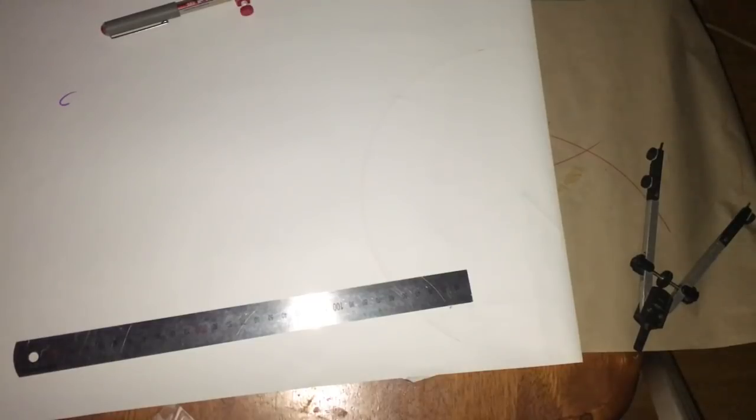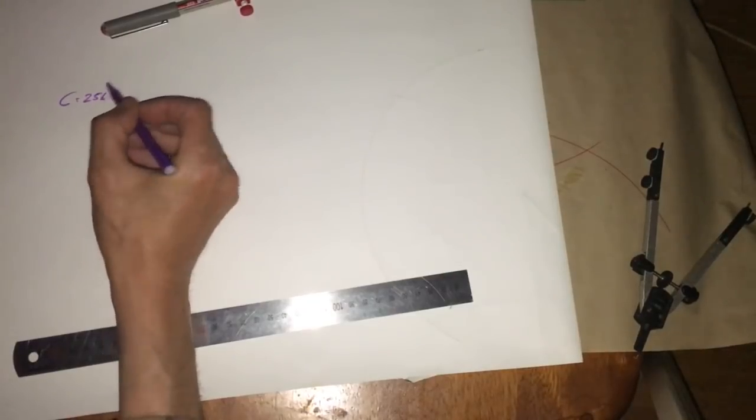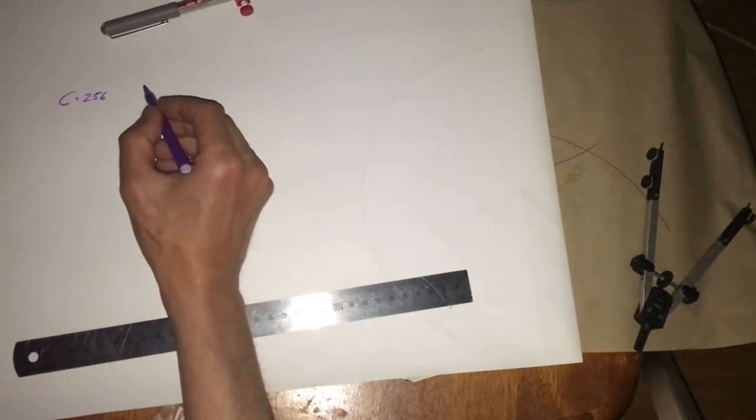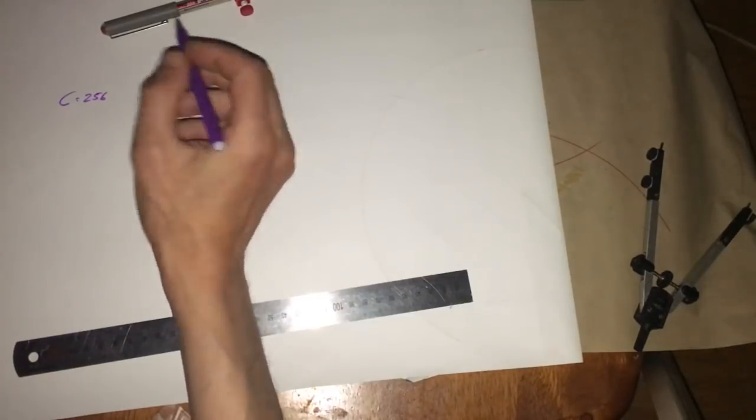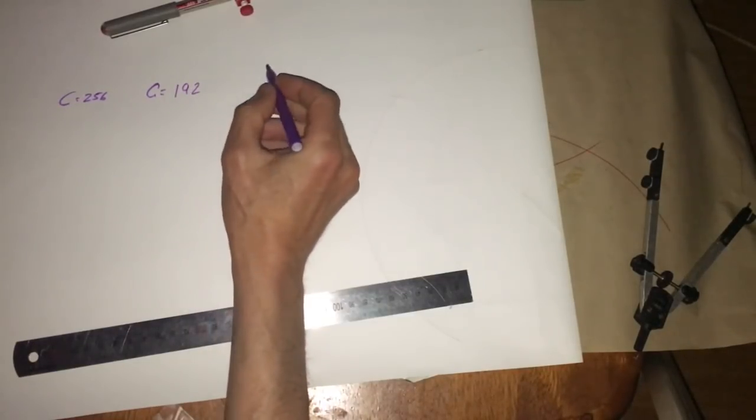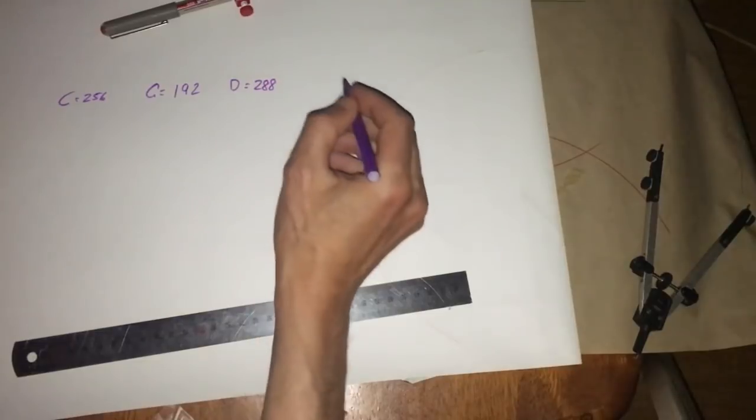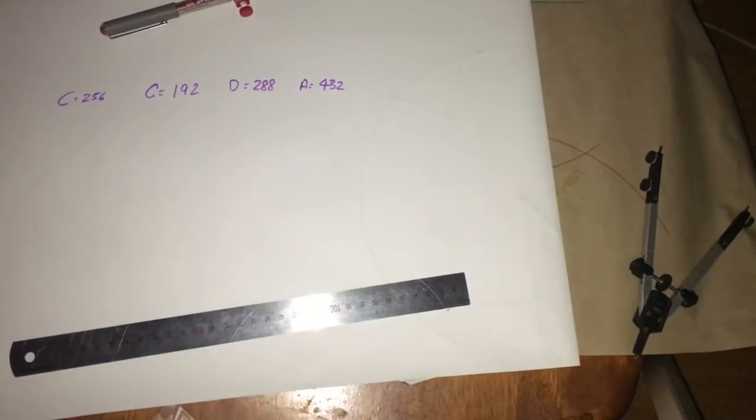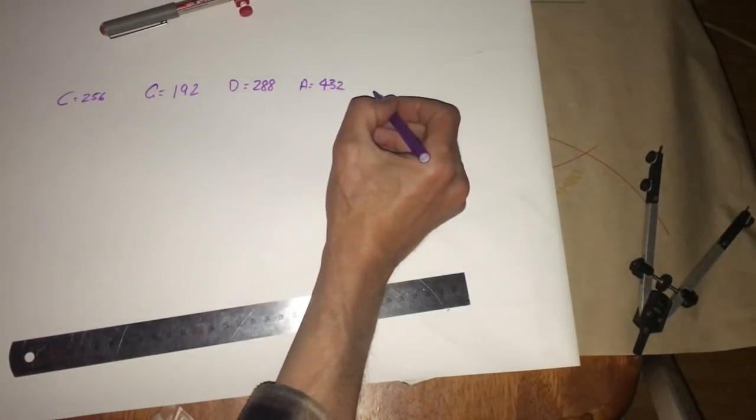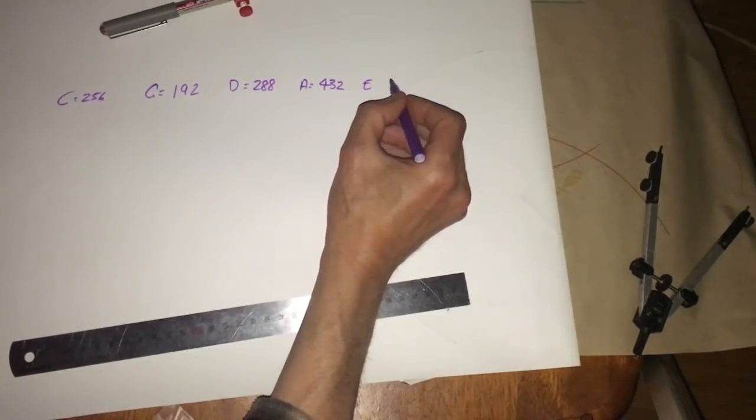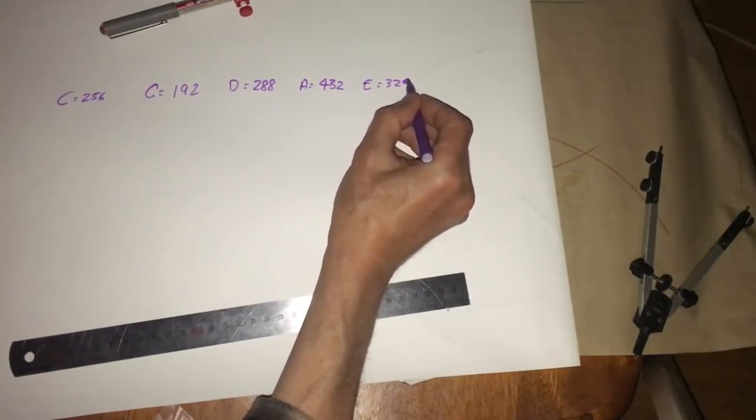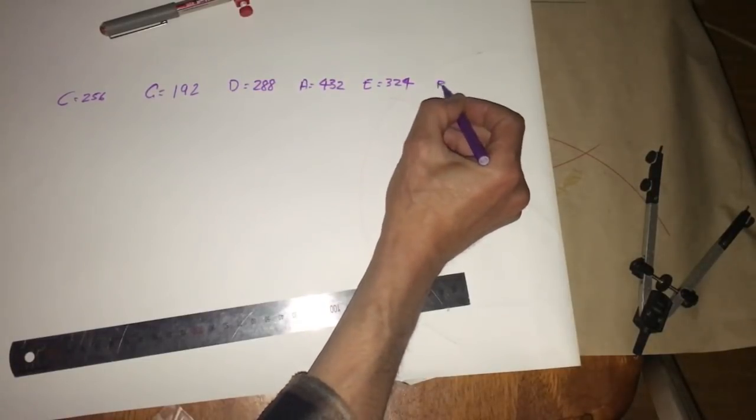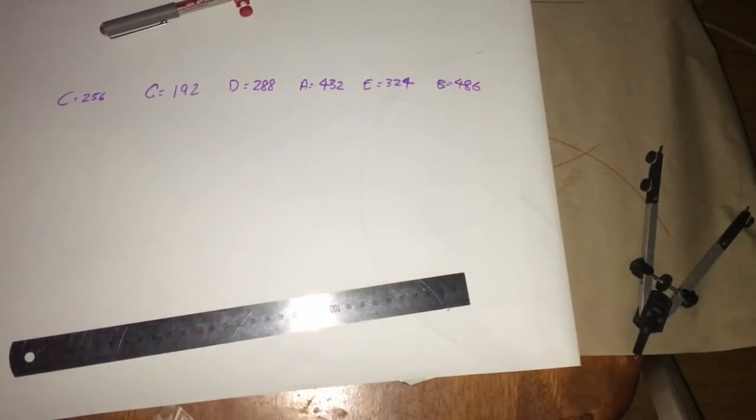In this idealized Pythagorean tuning, we have C at 256 hertz, G at 192, D at 288, my favorite number there. We have A at 432, so that's where you get that 432 versus 440 debate going on. And then we have E at 324 and B at 486.